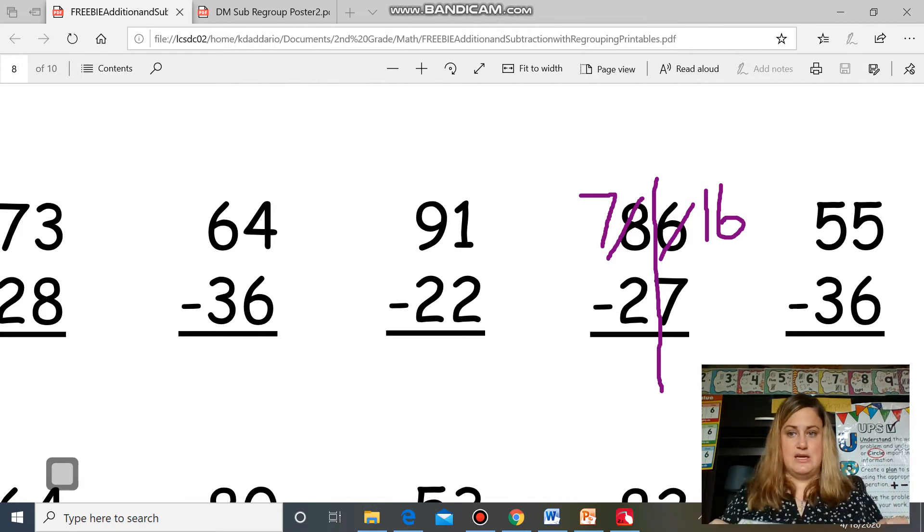Either drawing circles, 16, or using my number line. 16, jump back 7: 1, 2, 3, 4, 5, 6, 7. I land on 9, so my 9 goes in the ones place.